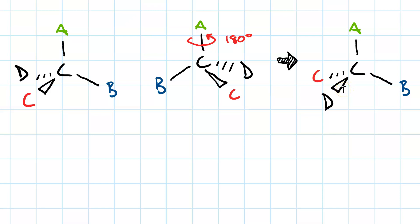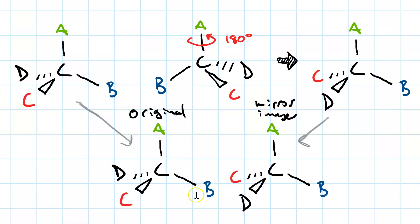Now it looks similar to the original: A is going straight up in both, and B is going down and to the right in both. The problem is, C and D don't overlap. In the mirror image, C is going away from us and D is coming toward us; in the original, D is going away from us and C is coming toward us. Group A and group B all overlap nicely, but group C and group C do not. Now if we had only three different groups — say two group As and a B and a C — those would always overlap with their mirror image and it's not chiral. So it's a carbon having four different groups that makes it chiral.